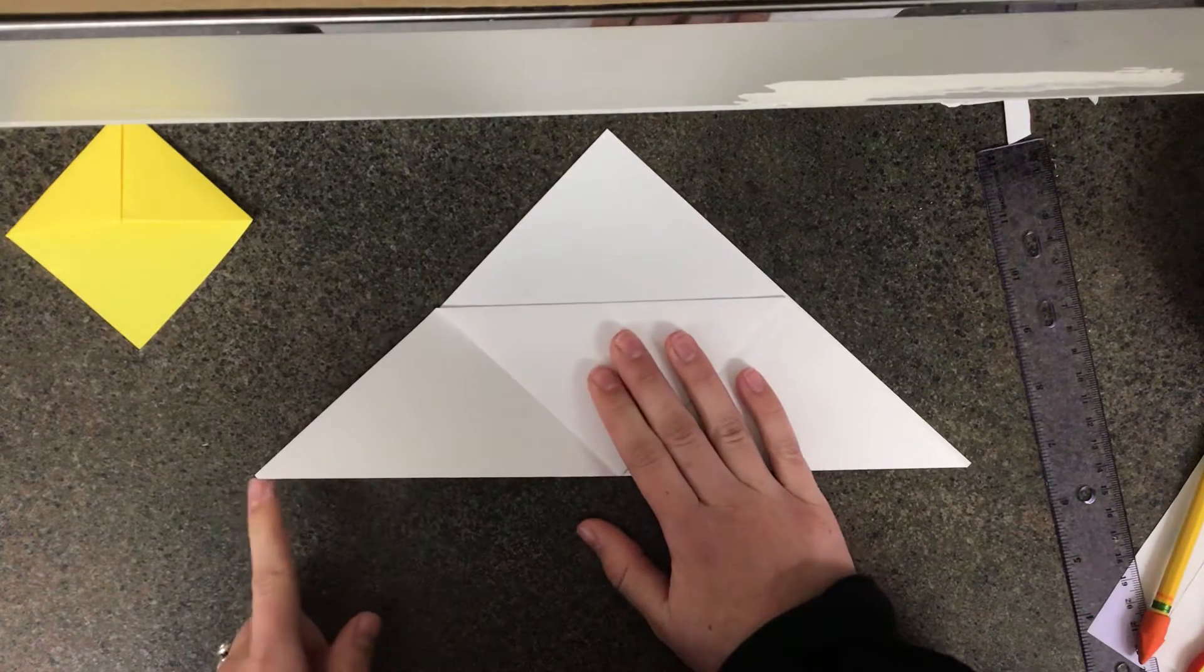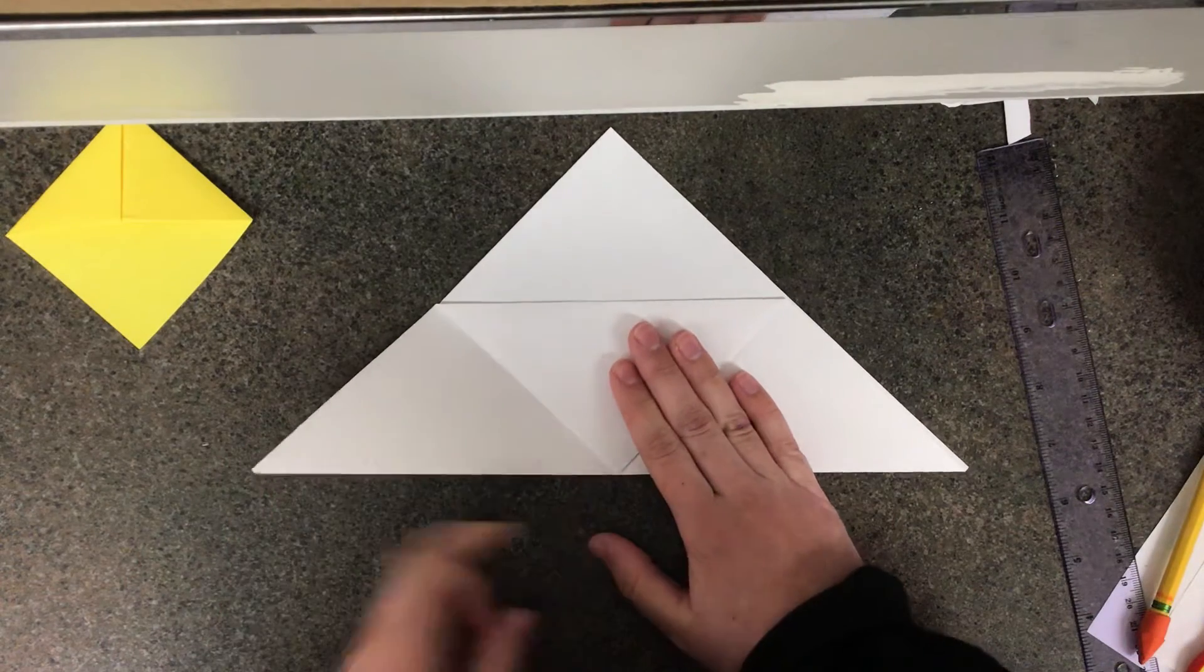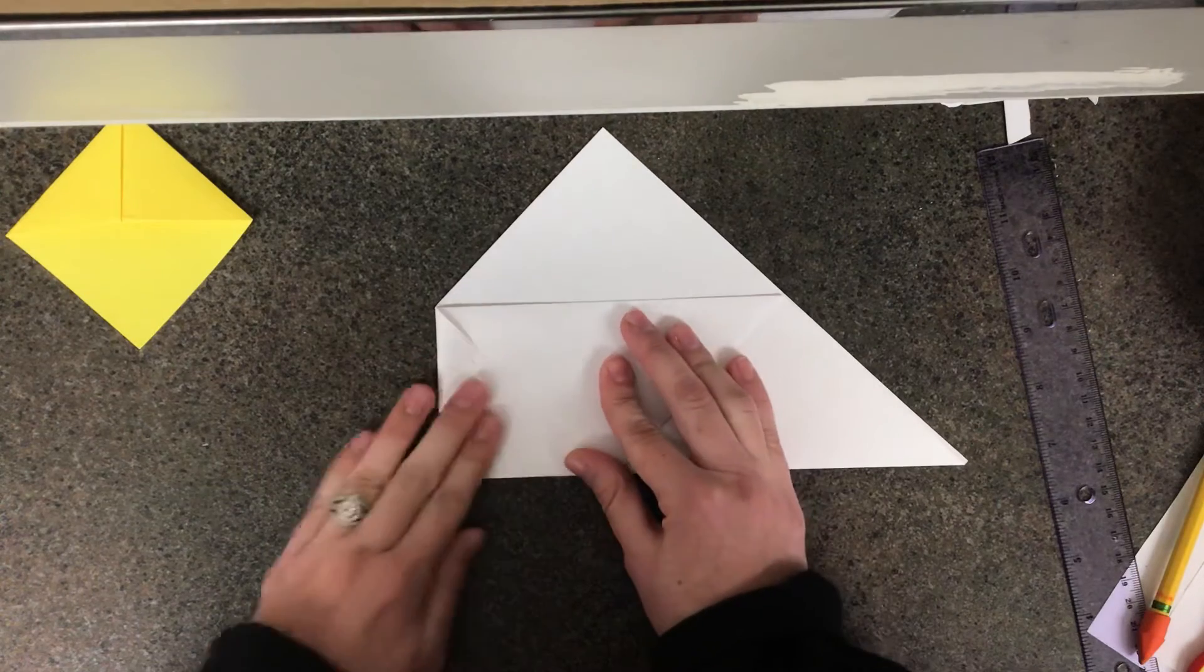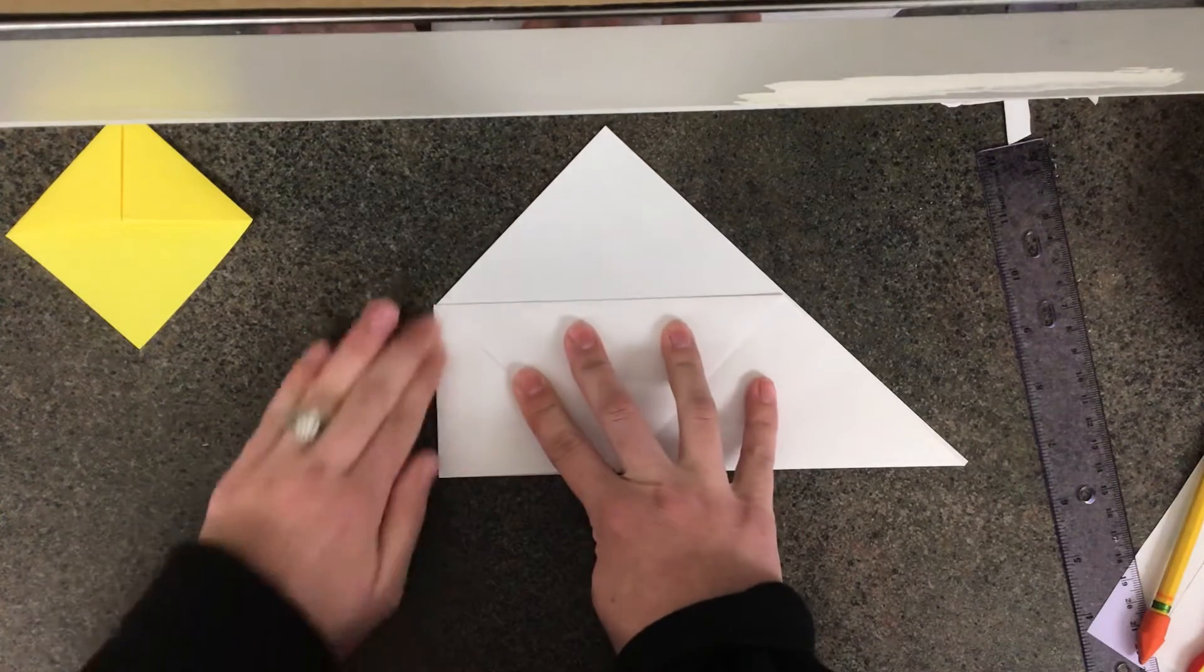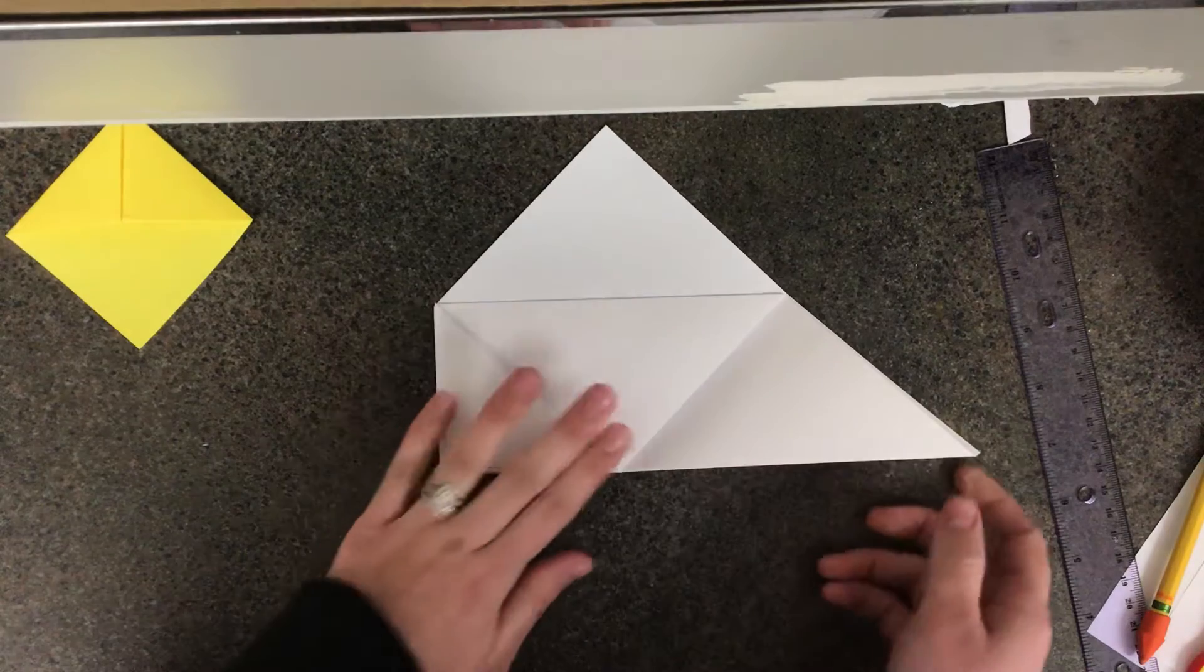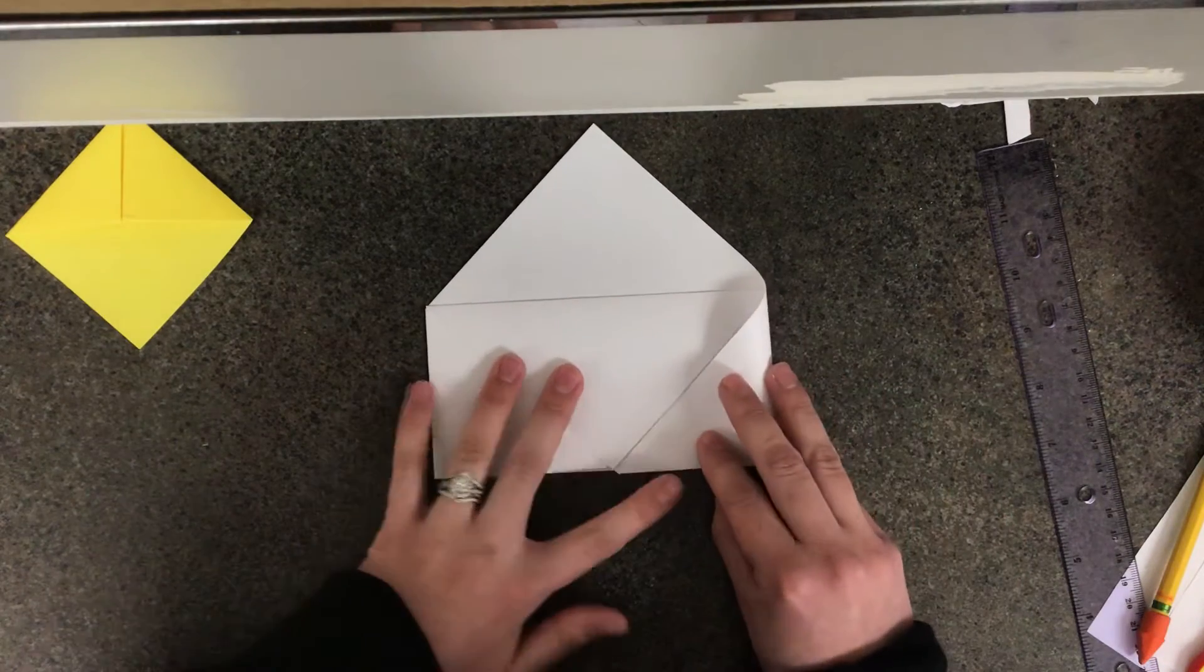Now I'm going to take the left corner and fold it over to the middle like this. I'm going to take the right corner and do the same thing, fold it over to the middle.